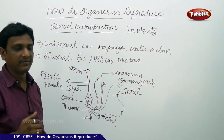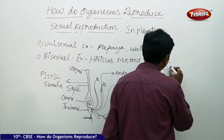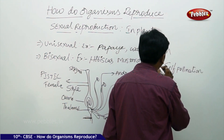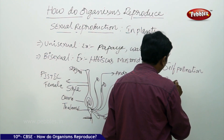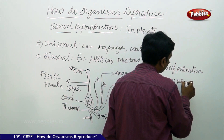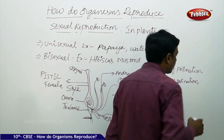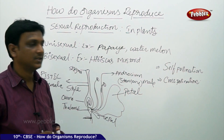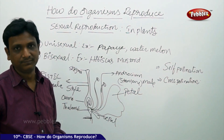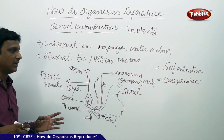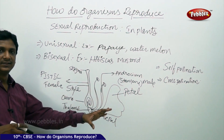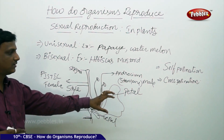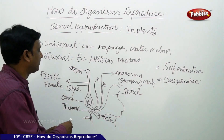If pollination takes place within the same flower, it is called self-pollination. If it takes place between two different flowers of the same species, it is called cross-pollination. Whatever the type — self-pollination or cross-pollination — it occurs with the help of agents like wind, water, or insects, with insects making the major contribution to pollen transfer.